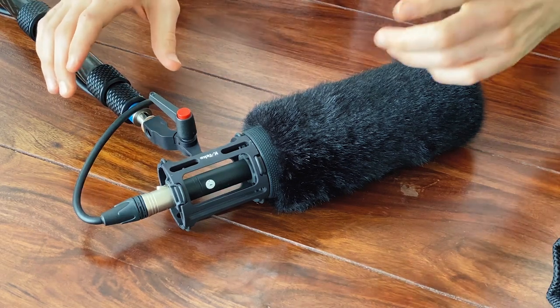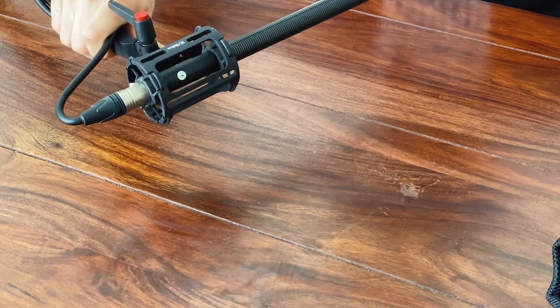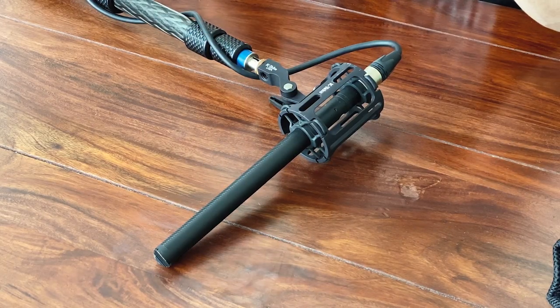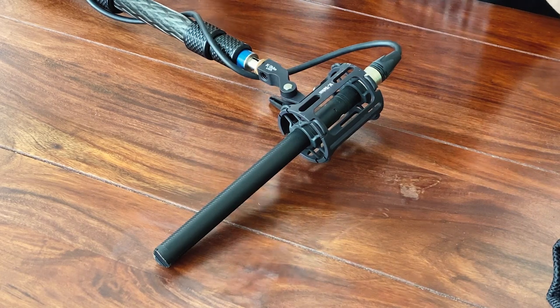In a directional mic — and I've got one here, the Sennheiser 416 — I'll take the wind killer off. In a directional mic, the directionality is achieved by having air gaps in front of and behind the diaphragm. It's an open system. The diaphragm measures the difference between the sound energy entering the front through the interference tube and the back through the air vents. It measures the phase difference, and because you're subtracting one from the other, it's quite a soft material — very susceptible to handling noise and very susceptible to wind energy potentially overloading the diaphragm.